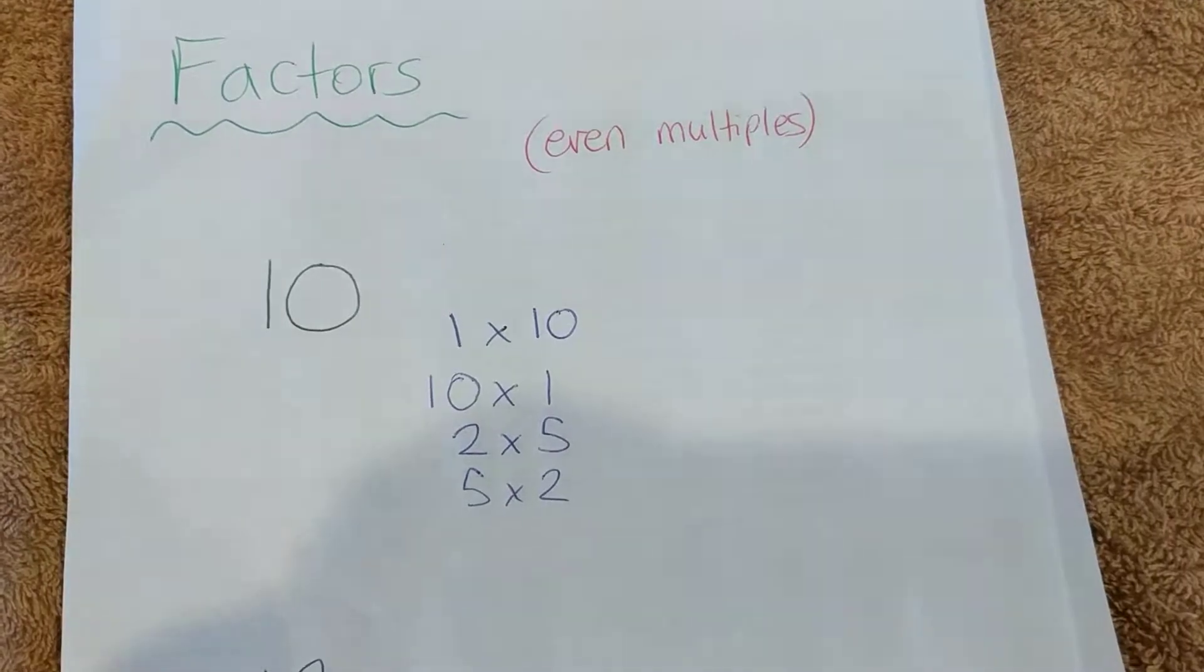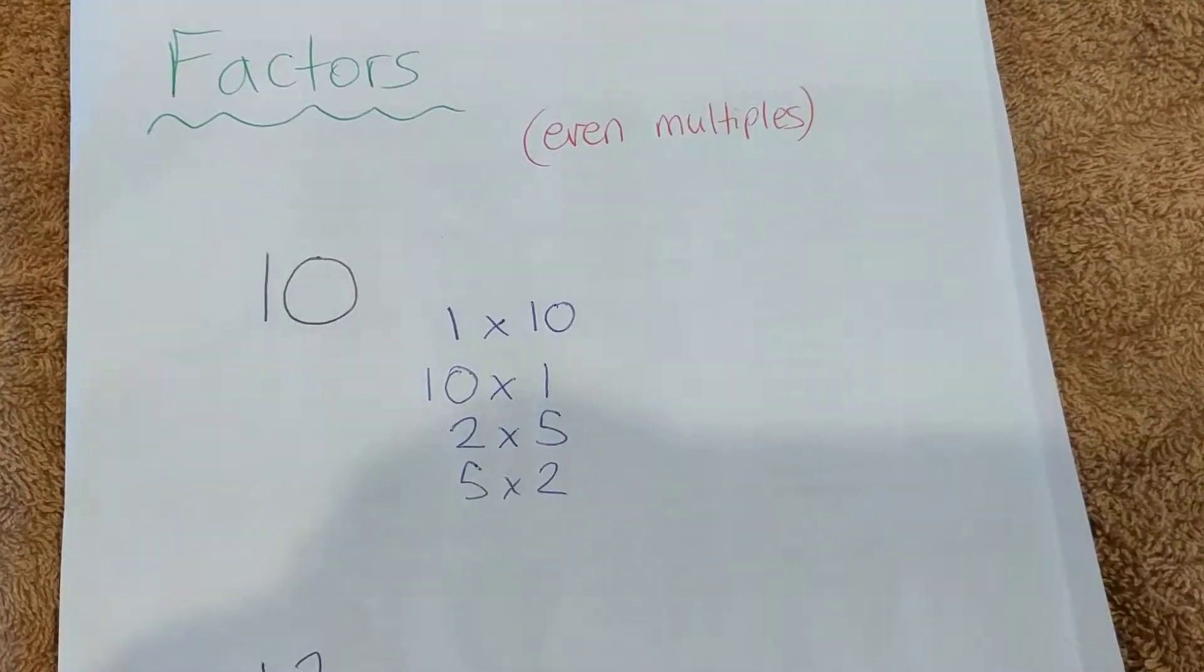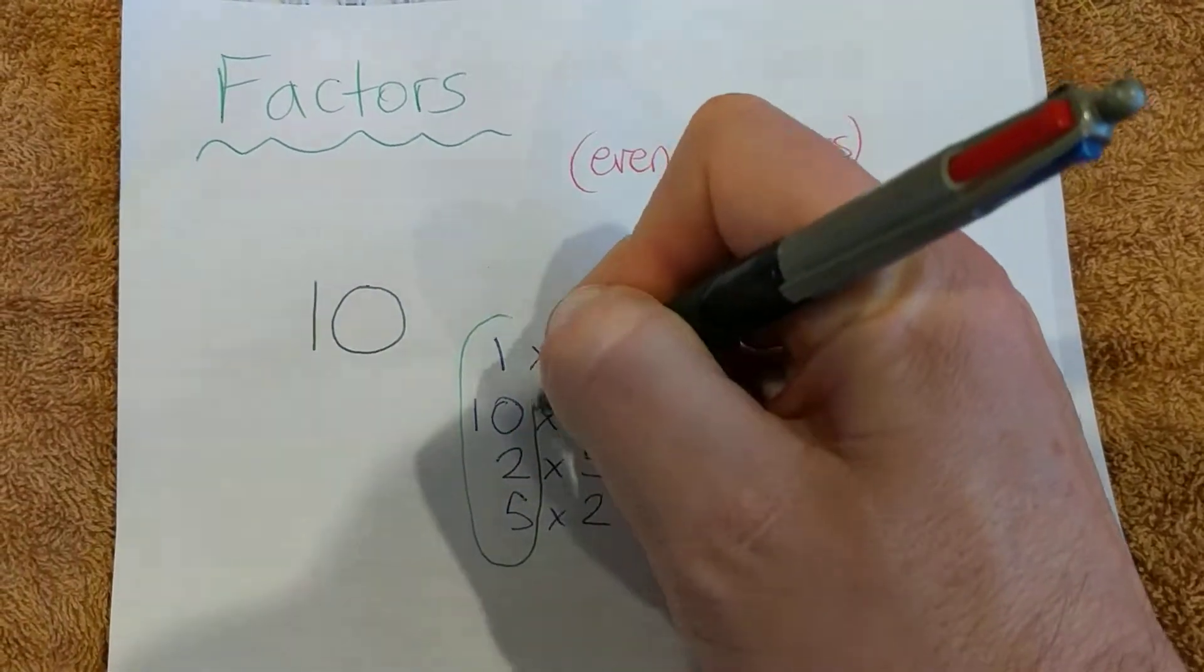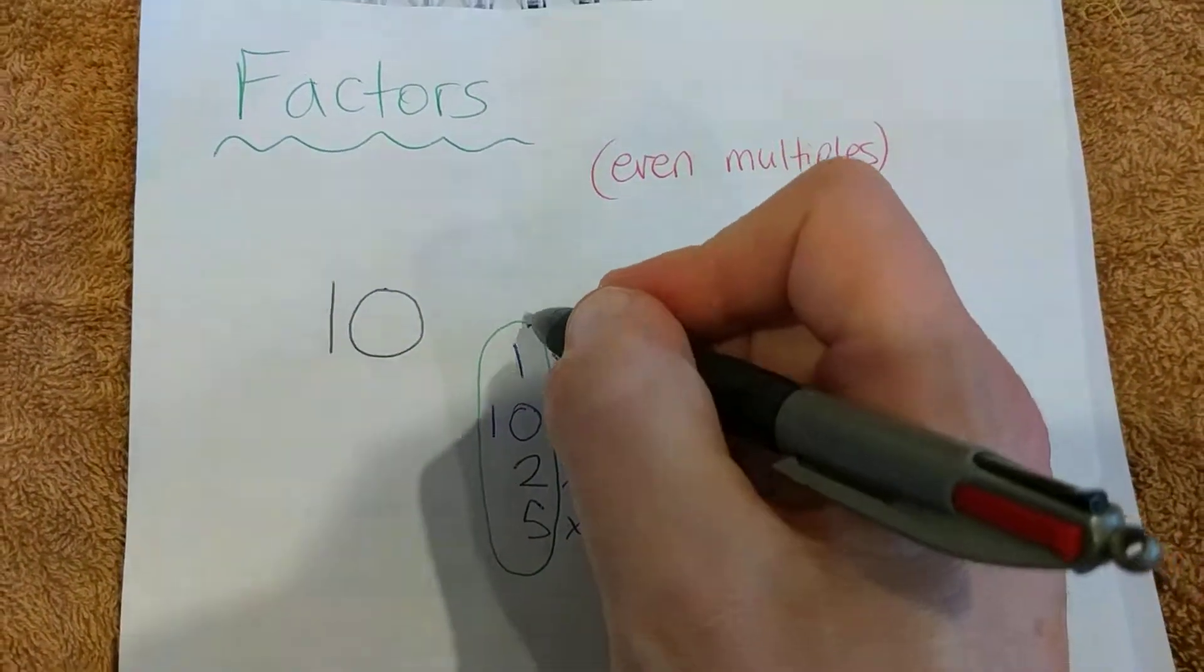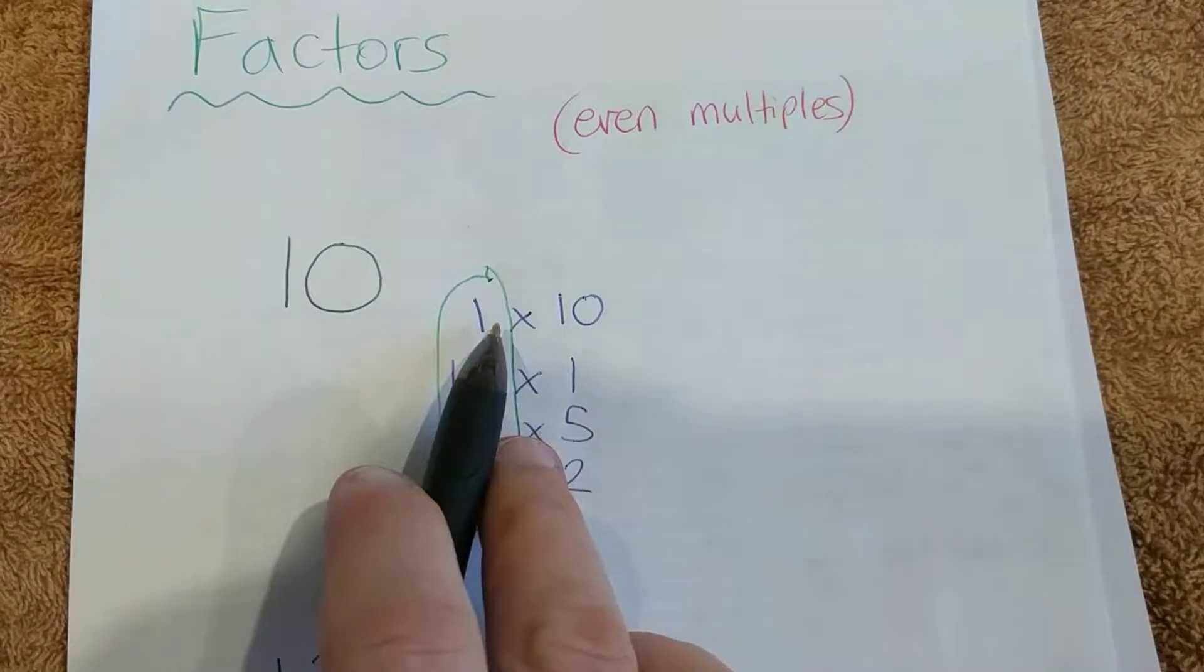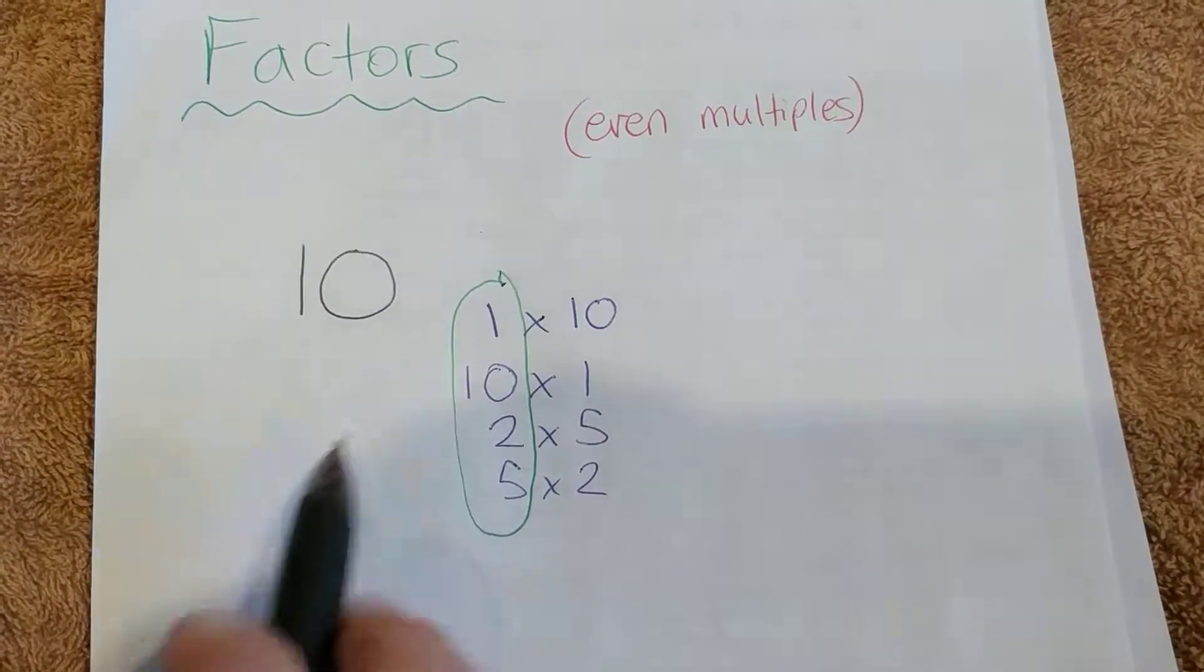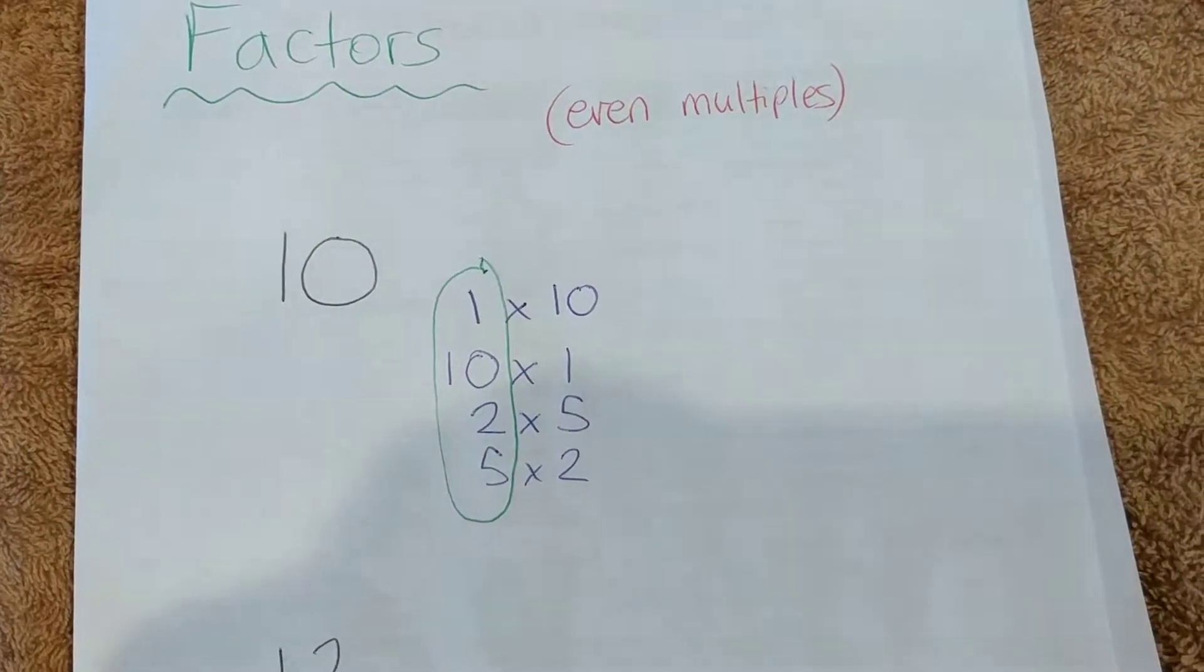So we've found four factors, and I did that systematically by going from 1 all the way up to 10. For example, 1 is a factor because it goes in 10 times, so straight away I know that 10 is a factor. That's just one way of doing it.